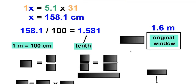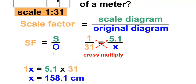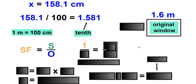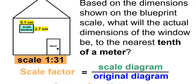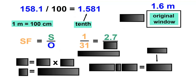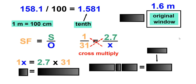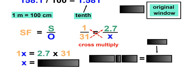We now have to find the dimensions of the other side of the window. We'll use the same formula: SF equals S divided by O. The scale factor has the same ratio of 1 to 31, so that can be written as 1 over 31. The scale will be 2.7 centimeters, divided by the original, which is the unknown, so we can use X. Next, we'll cross multiply: 1 times X is equal to 2.7 times 31.